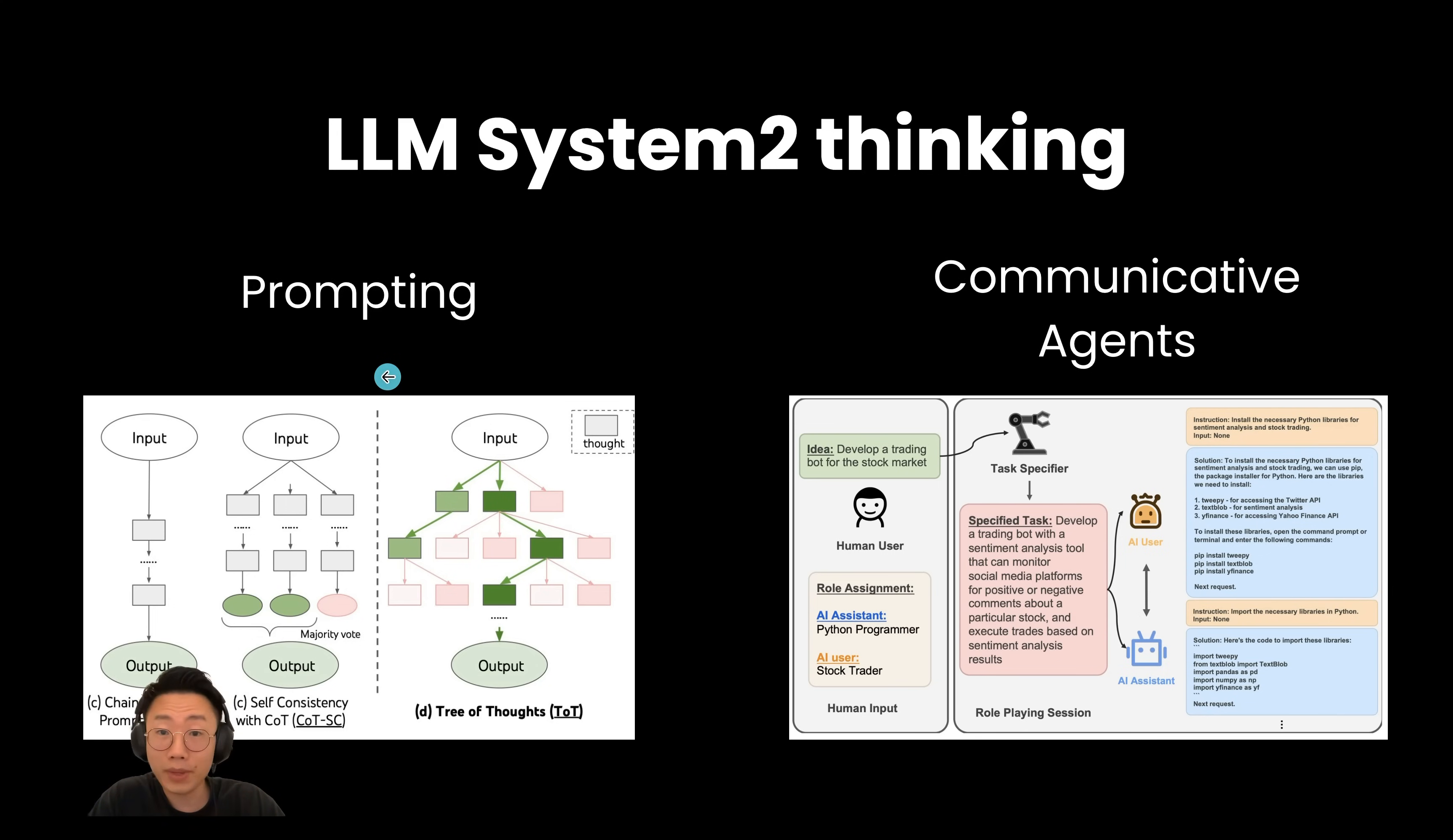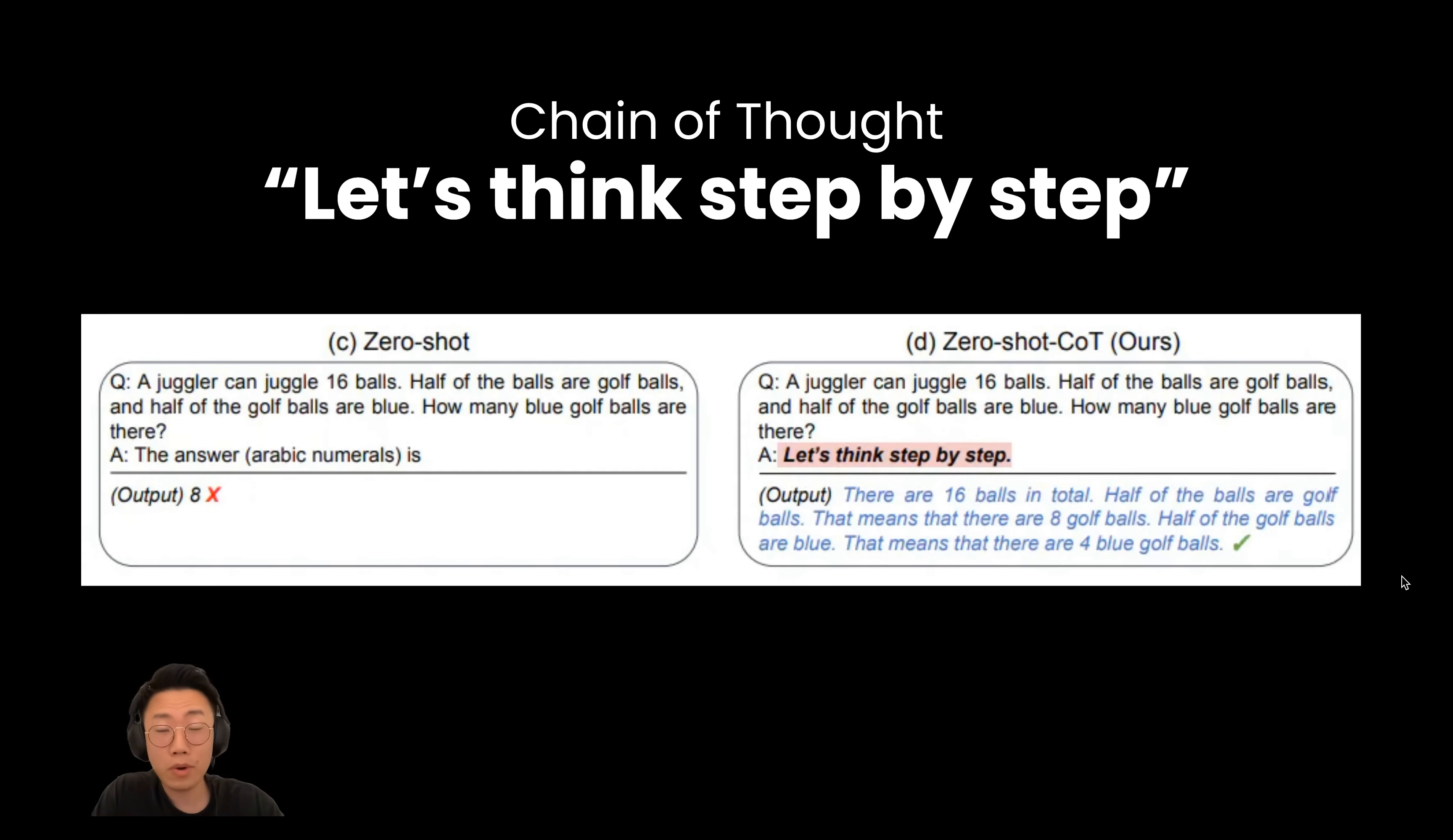Firstly, some prompt engineering strategies. One of the most simple and common ways to do that is chain of thought. Many of you are probably pretty familiar with this method. It basically means that before the large language model is going to generate anything, you will insert a sentence called let's think step by step.